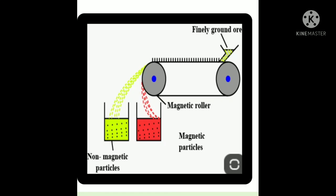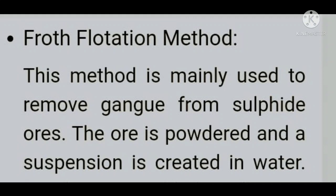The next one is froth flotation technique. Froth is like foam — for example, the froth formed while washing clothes with detergent. This technique is mainly employed for the separation of sulphide ores. In our previous class we studied oxide ores, carbonate ores, halide ores, and sulphide ores — this technique is mainly used for sulphide ores.